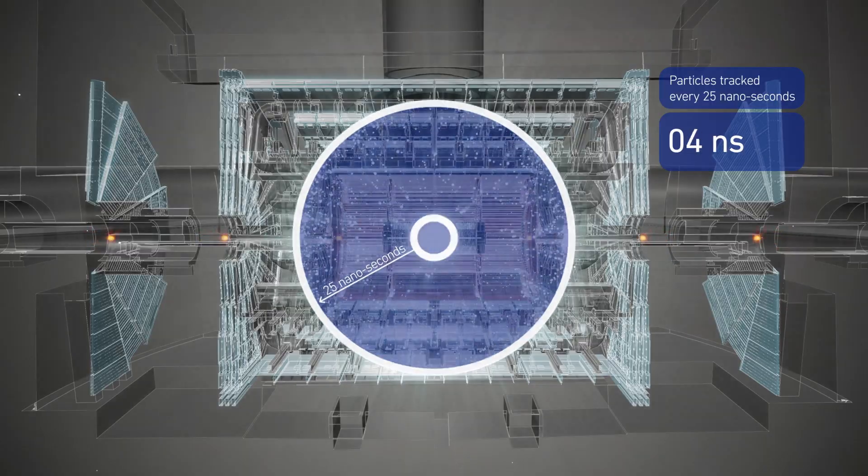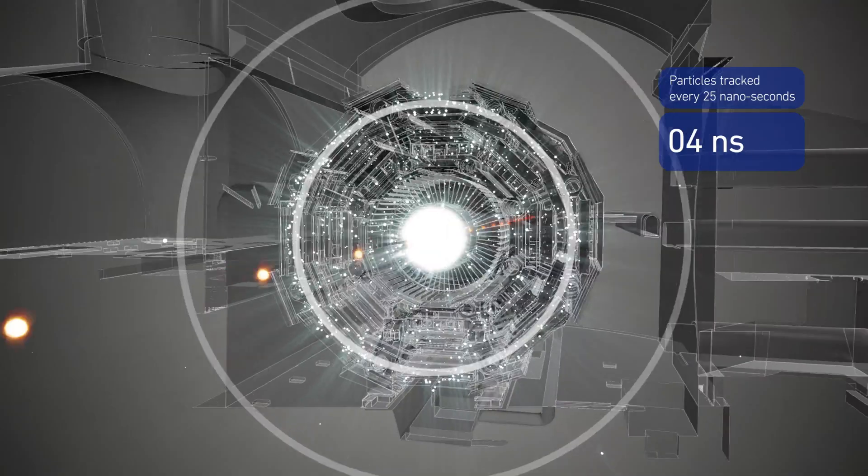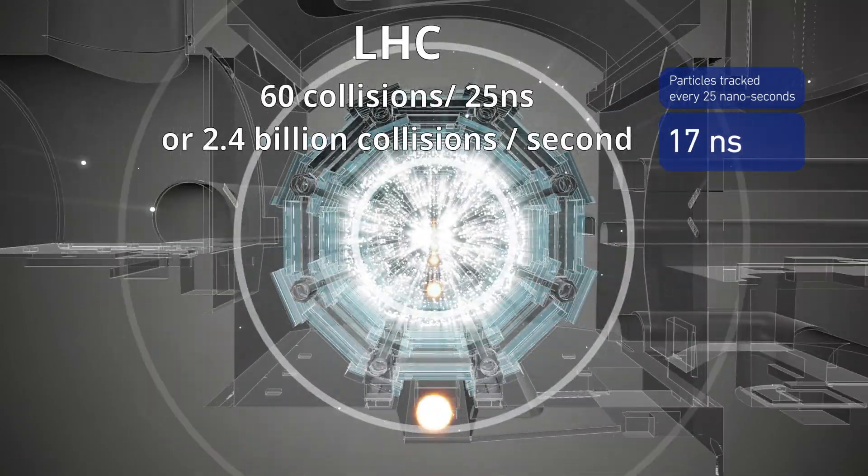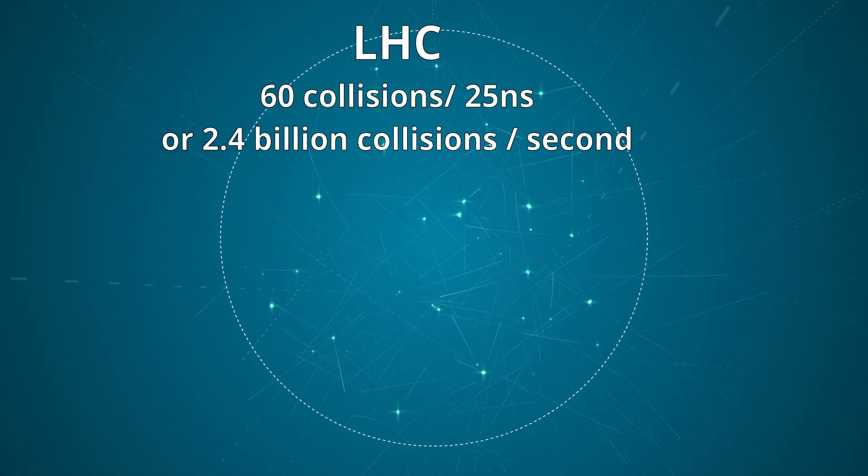To clarify, for ATLAS and CMS, every 25 nanoseconds, there are approximately 60 to 70 collisions, or 2.4 billion collisions per second, for these two experiments.